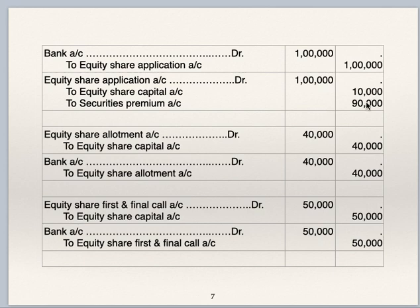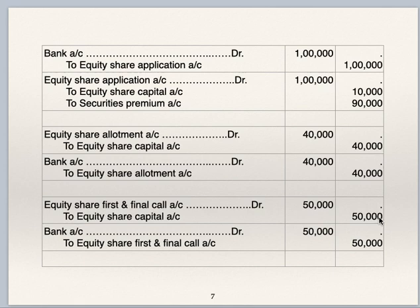They have asked you to prepare ledger accounts — equity share capital account and securities premium account. In the equity share capital account, on the credit side: by equity share application Rs 10,000, by equity share allotment Rs 40,000, and by equity share first and final call Rs 50,000 — totalling Rs 1,00,000 to the credit of share capital account. On the securities premium account credit side: by equity share application Rs 90,000.